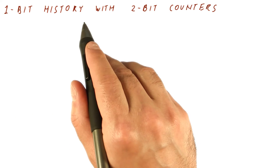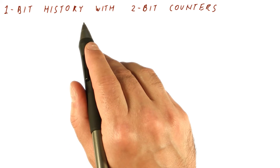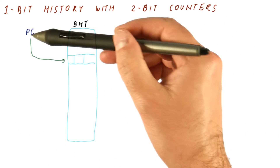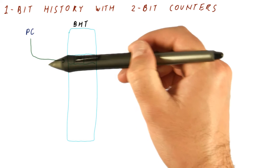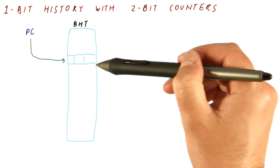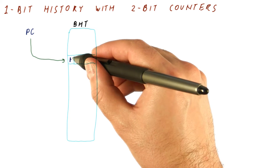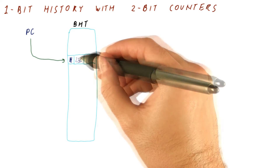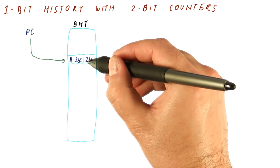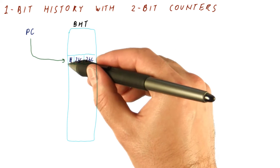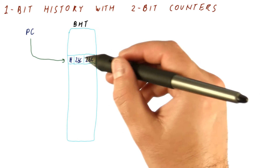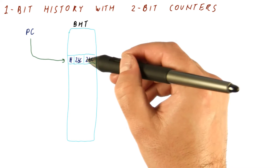Let's look at the example history-based predictor that has a one-bit history with two-bit counters for each history. The general approach stays the same: we take some bits of the PC and index into the branch history table. But instead of having a one-bit or two-bit counter in each entry, now we have a single bit history in each entry, a two-bit counter for when the history is zero, and a separate two-bit counter when the history is one. The state of the predictor is now the state of a single bit history and two of these counters.